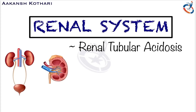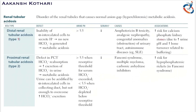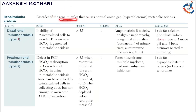Hello everyone, welcome to a module on the renal system. In this module, we will talk about renal tubular acidosis. Renal tubular acidosis is a disorder of the renal tubules, where the defect primarily lies in the renal tubules, which causes a normal anionic gap metabolic acidosis.